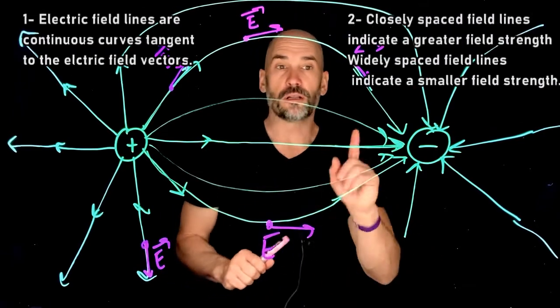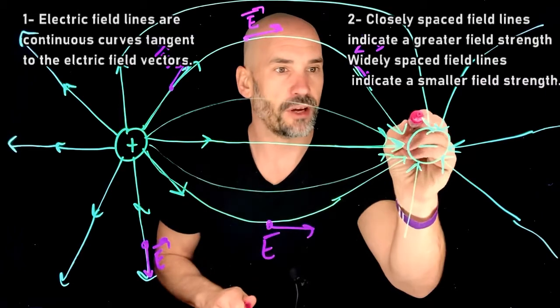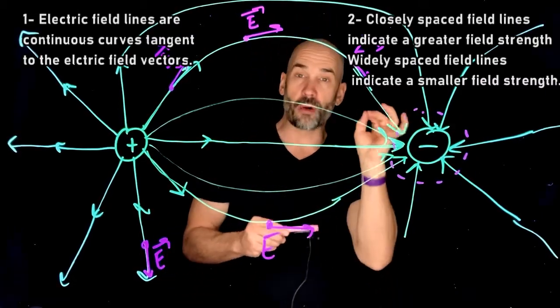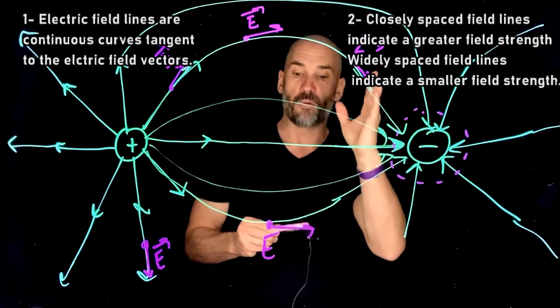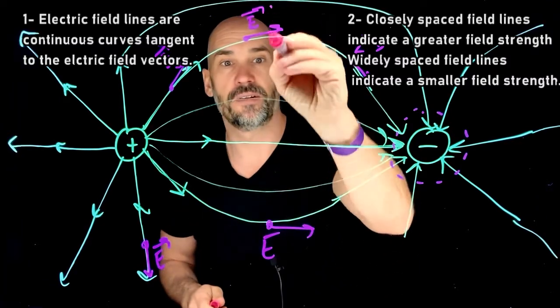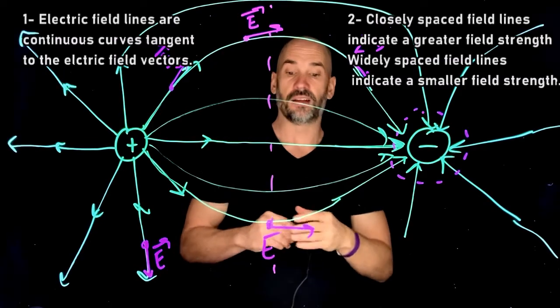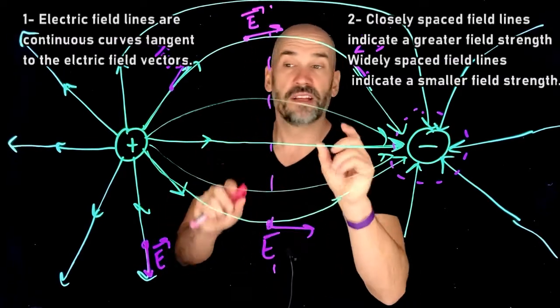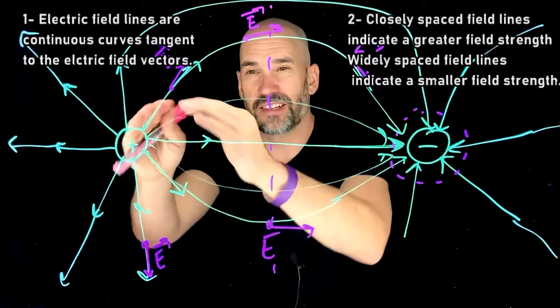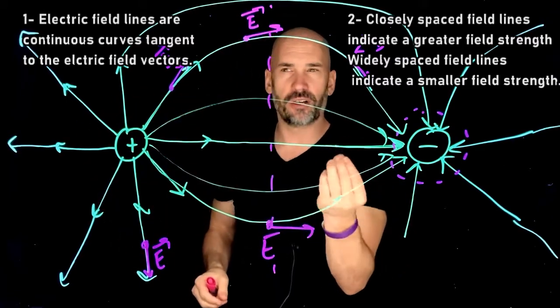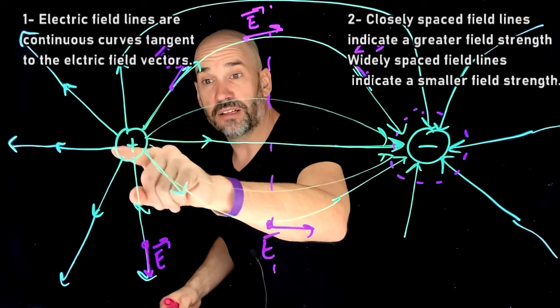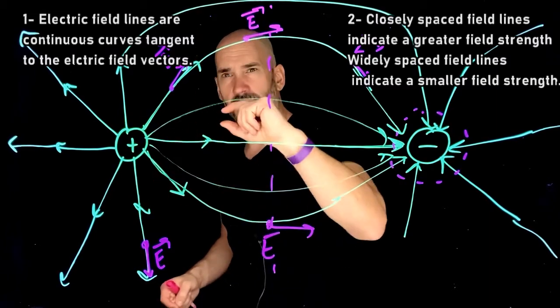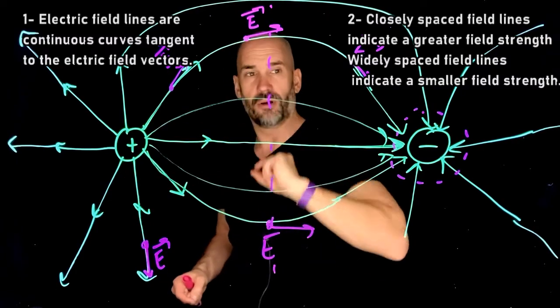Rule number two, closely spaced lines, like around here, indicate a greater electric field strength, and widely spaced field lines, like here, indicate less of an electric field. So in other words, wherever the electric field lines are packed together the tightest, that's where you're going to find the strongest field, which makes sense, because that would be near the particle. You'd expect the strongest field to be right near the particle, where R is small, right? The distance away from the particle is small.